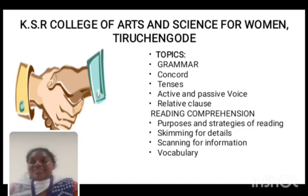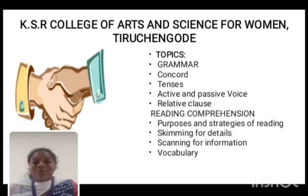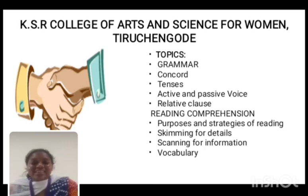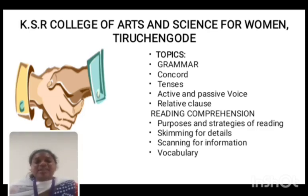Let us see grammar. Unless we master grammar, we cannot speak or write effectively — that is really important. Grammar is a systematic study using scientific method which provides information and guidance necessary to learn a language. The science of grammar teaches us how language is spoken. Rules and regulations are available in every grammar of every language. Topics include concord, tense, active voice, passive voice, and related classes.